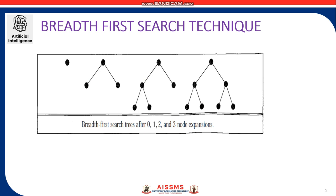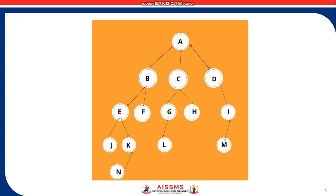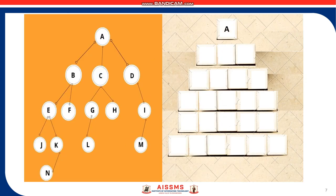Let us take an example. For this given graph, first we insert node A into the Queue. When we take out A from the Queue, we check the paths from A which are B, C, D. Note that any order can be used — C, B, D or D, C, B — but keep one order constant to solve further. Now if we remove B from the Queue and check the paths from B which are E, F, these elements are inserted from the tail and exit is from the head.